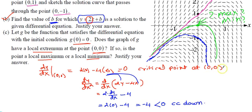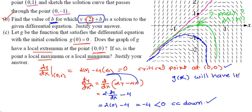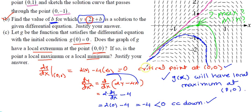Since the second derivative is negative at (0,0), the curve is concave down. Therefore, g(x) has a local maximum at (0,0). To write the answer: state that the first derivative is 0 at x=0, y=0 (critical point), and the second derivative is negative, confirming a local maximum. All your shown work serves as the justification. I hope this helped — watch the first video with two examples and take good notes.